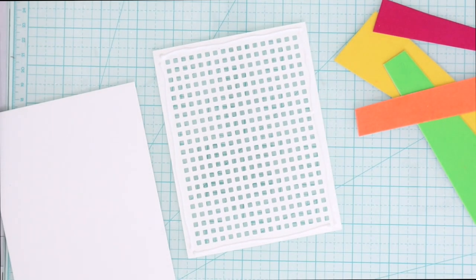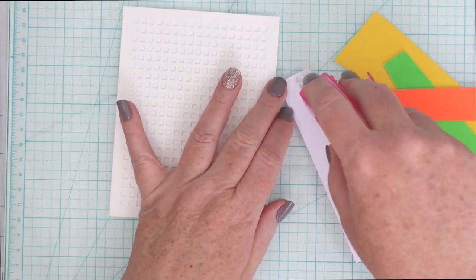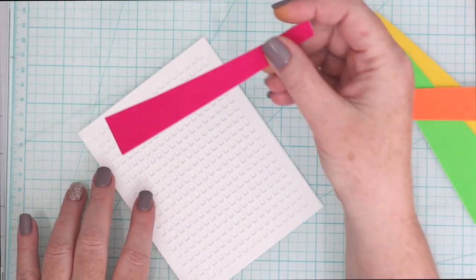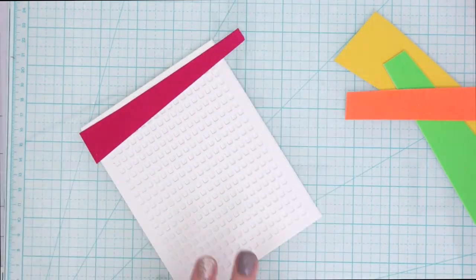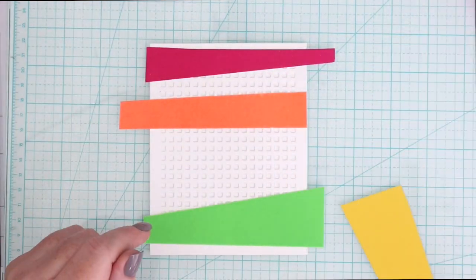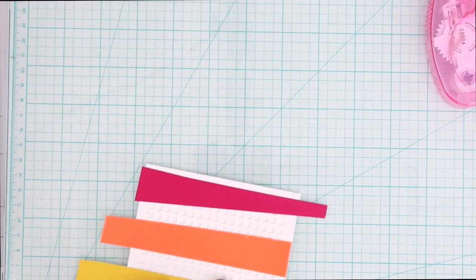For now I'm just using my Tim Holtz trimmer to cut down some strips at an angle, and then I'm going to use the ThermaWeb Ultra Bond pen to adhere the Waffle Flower Micro grid down to an A2 piece of white cardstock. Then I'm just going to use plain old tape runner behind the Flock Sheets because they have that paper on the back. You can use any kind of adhesive to adhere them down. You don't need anything special.